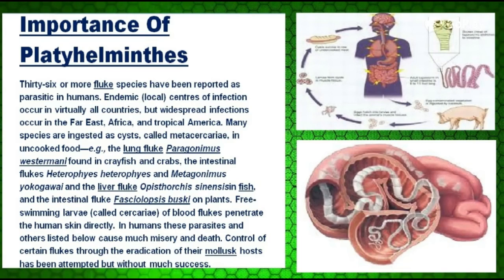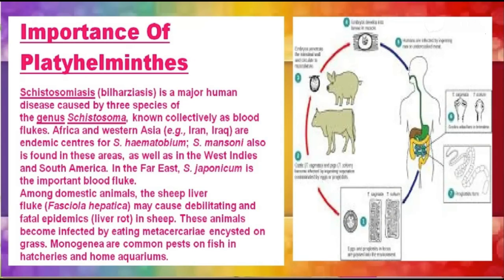In humans, these parasites cause much misery and death. Control of certain flukes through eradication of their mollusc hosts has been attempted but without much success. Disease is caused by three species of genus Schistosoma, known collectively as blood fluke. Africa and Western Asia — for example Iran and Iraq — are endemic centers, as well as the West Indies and South America. In the Far East, among domestic animals, the sheep liver fluke may cause debilitating and fatal epidemics in sheep. These animals become infected by eating contaminated grasses.